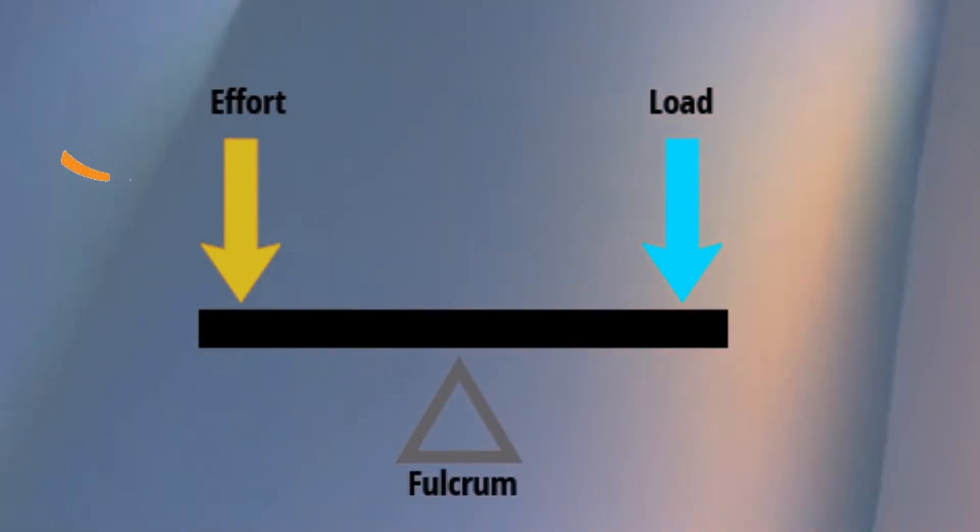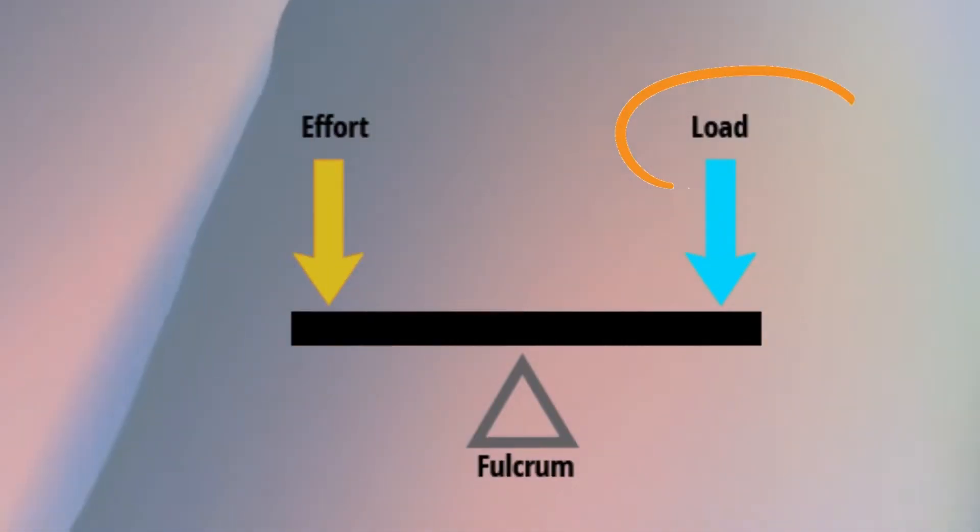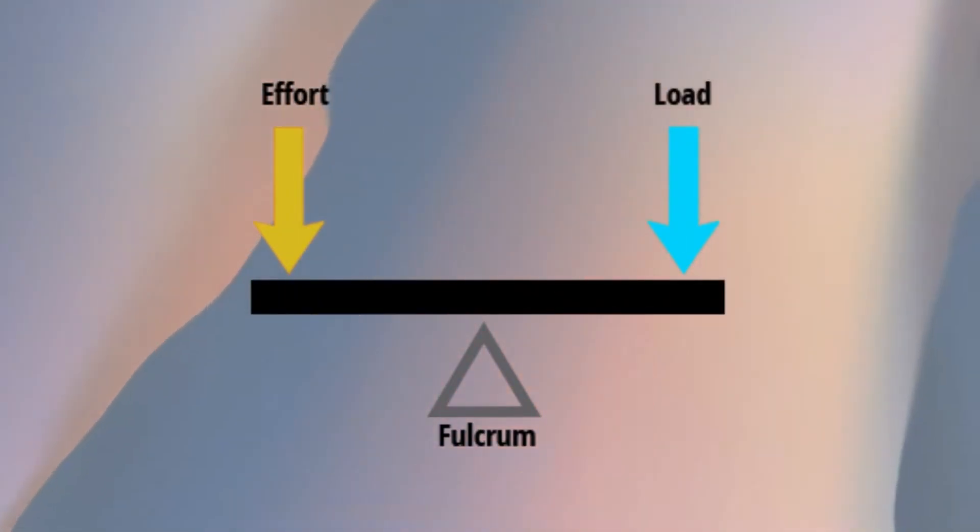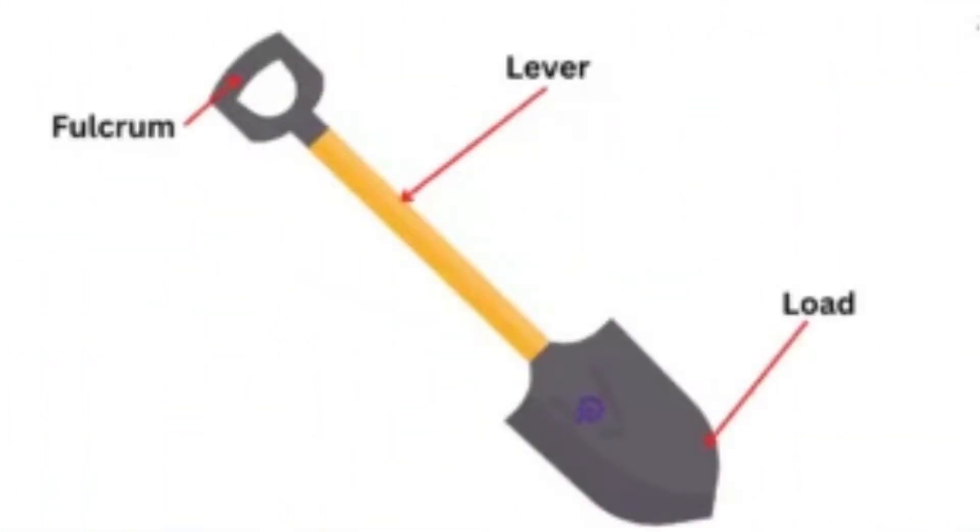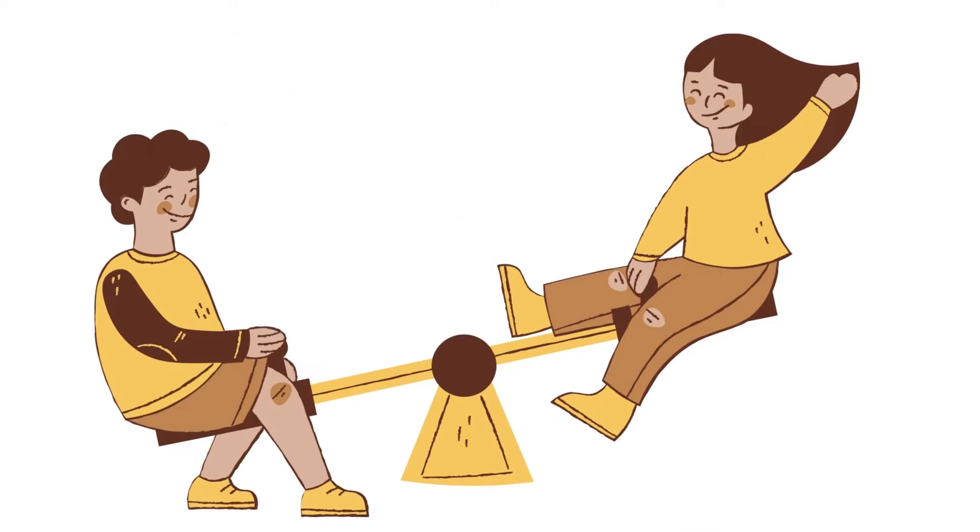An effort is a force that is applied to the lever. Load is the object we want to move, and fulcrum is the point of rotation. Following are the examples of levers around us: a pair of scissors, a shovel, a seesaw.